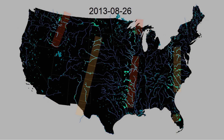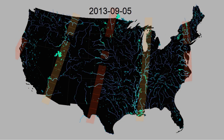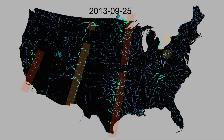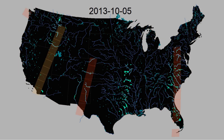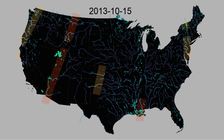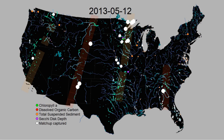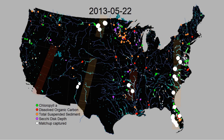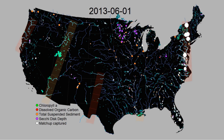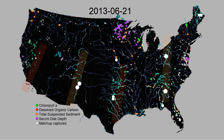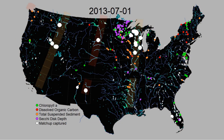To promote this kind of work, we built Aquasat, which is a dataset that pairs samples taken on large rivers and lakes with Landsat imagery. These matchups can be used to train, test, and build models that predict water quality without needing someone on the ground to take a sample.